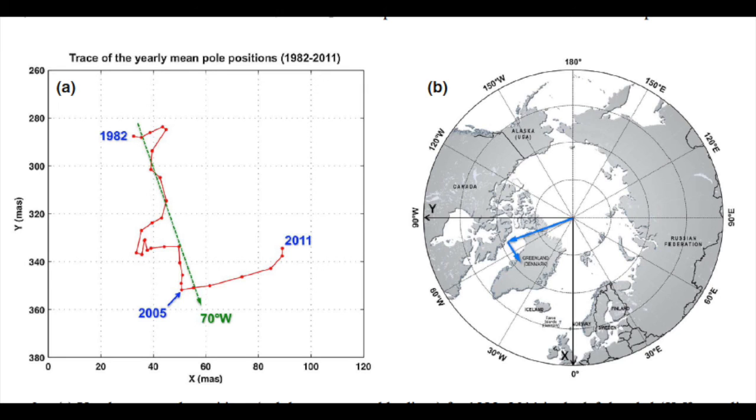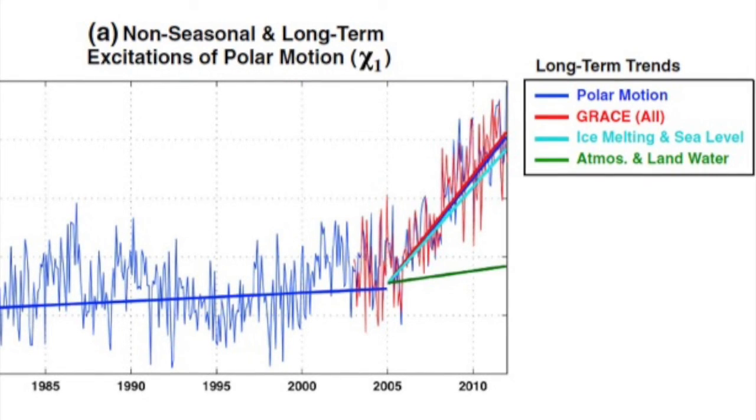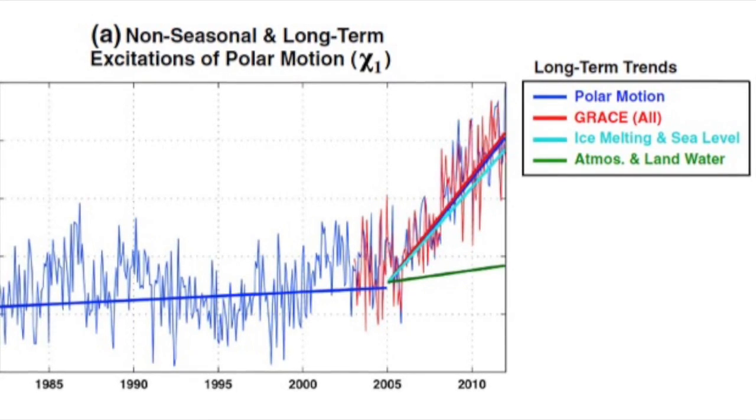Now this is important because this suggests that we were losing mass from Greenland. And importantly, it shows that there was a sudden change in the rate of melting in Greenland in 2005, and that melting rate has continued from 2005 until the present. So this is important because it shows the rate of melting over Greenland has had a rapid increase since 2005.